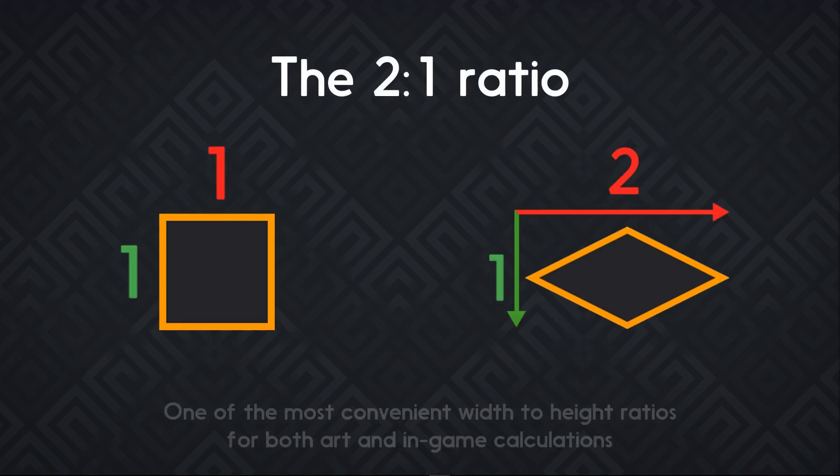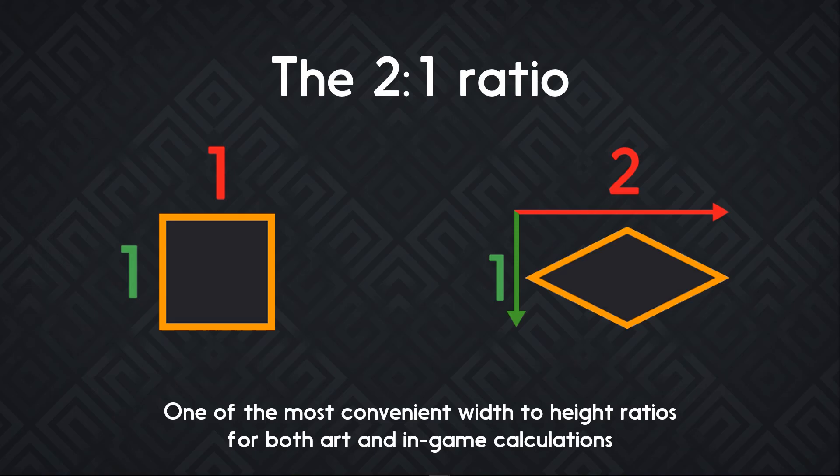In games, we don't really use those angles. Instead, we use a simple ratio that facilitates the creation of game assets, but also the calculations in the game, so we don't care about the angle of the axes. Instead, we tend to make the tiles twice as large as they are high and turn them into rhomboids.